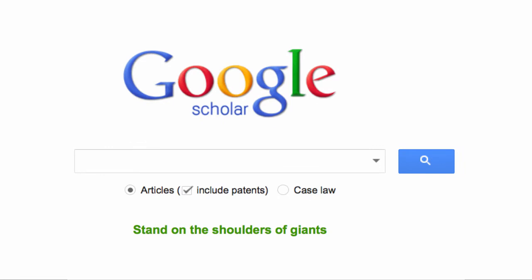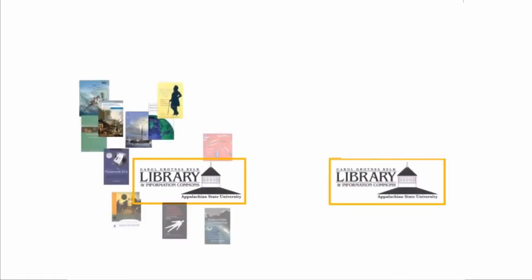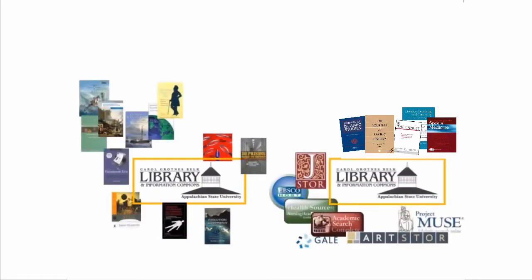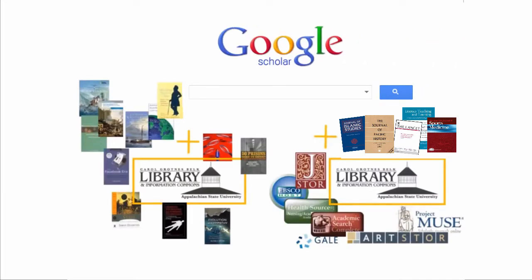Google Scholar locates references to academic journal articles, books, theses, and other scholarly content. But often, only an abstract is available for your results. Fortunately, we can combine Belk Library's large full text book and journal collections with the power of Google Scholar's search engine.